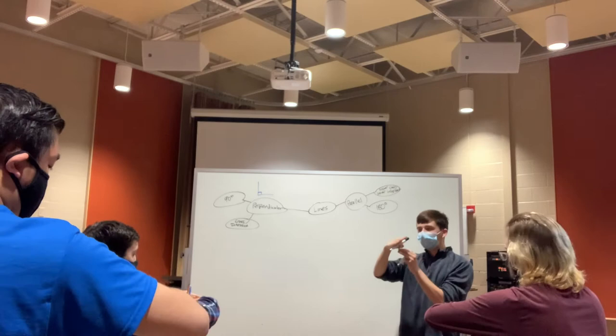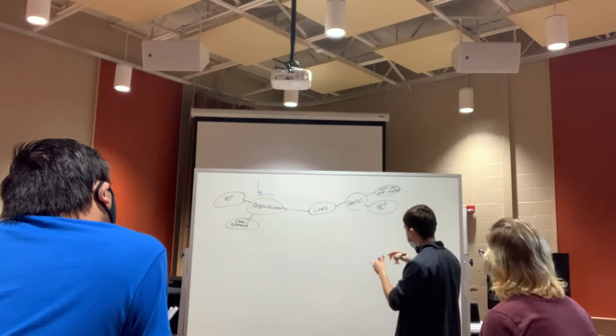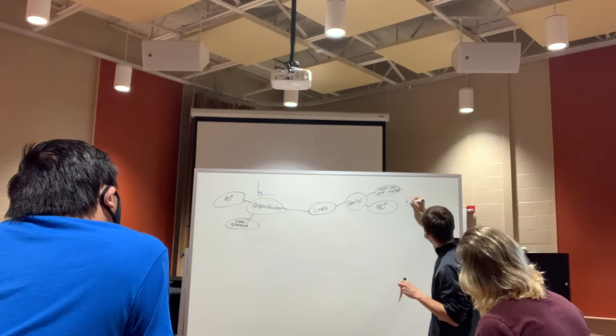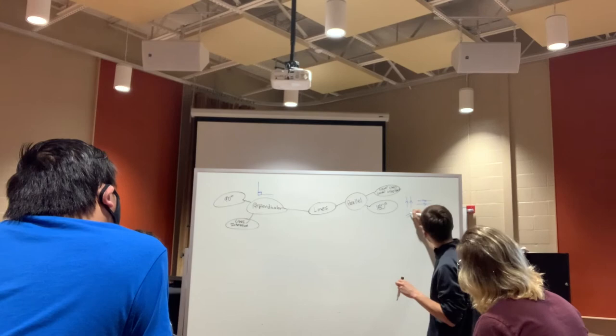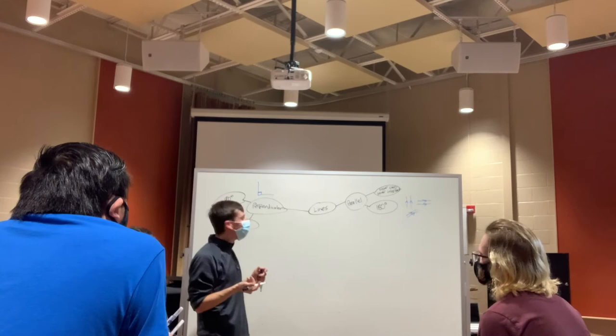I'd say because 90 degree, we have a perpendicular, and for parallel, 180. So then, for the picture-wise, it can look very different. It could be horizontal, it could be vertical, it could even be diagonal, too. There's many different ways that parallel lines can work, as long as they have that 180 degrees.